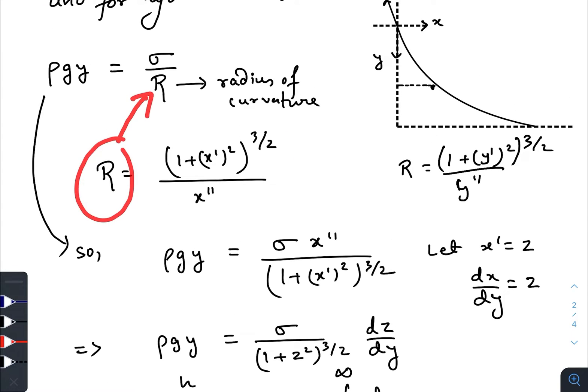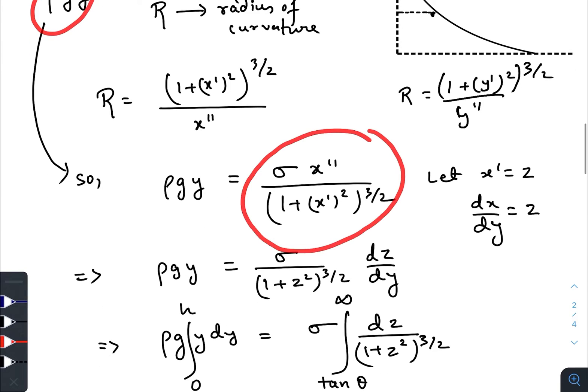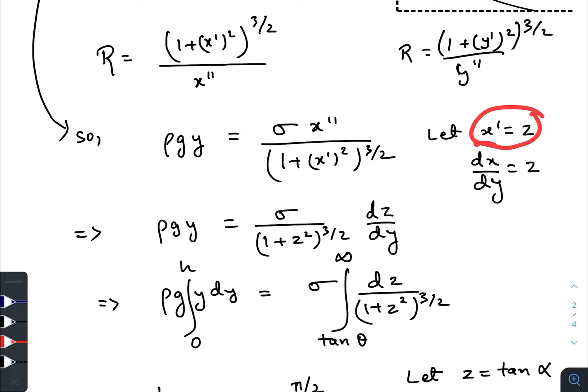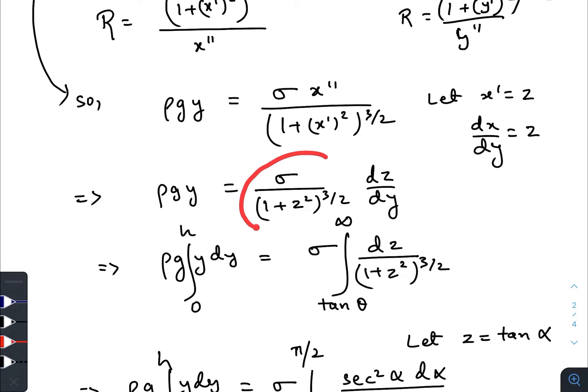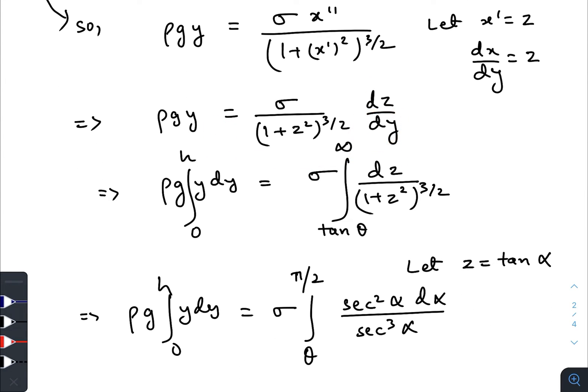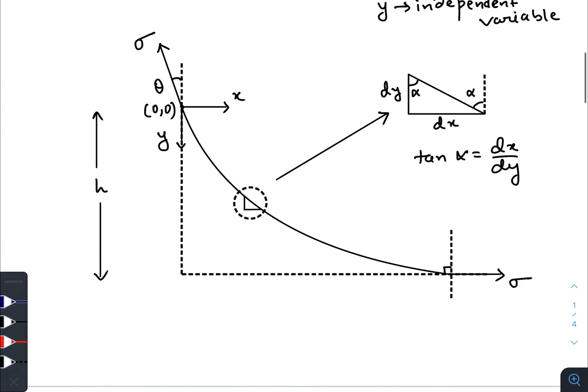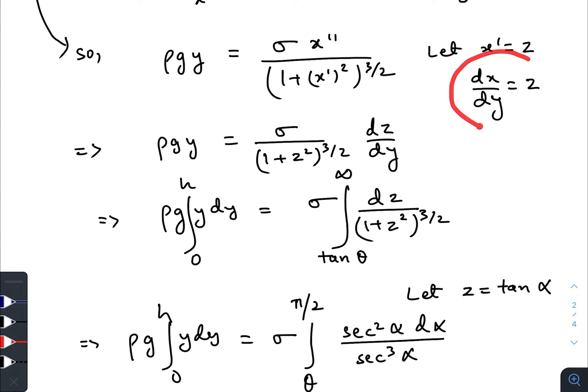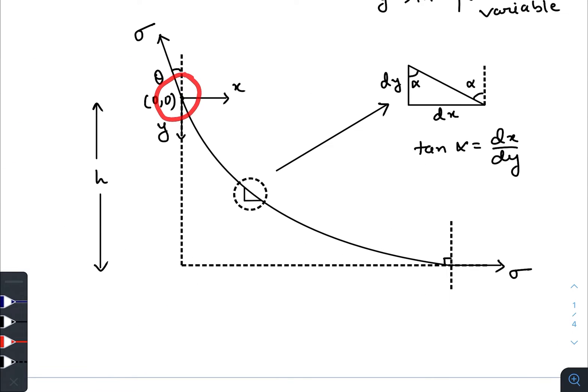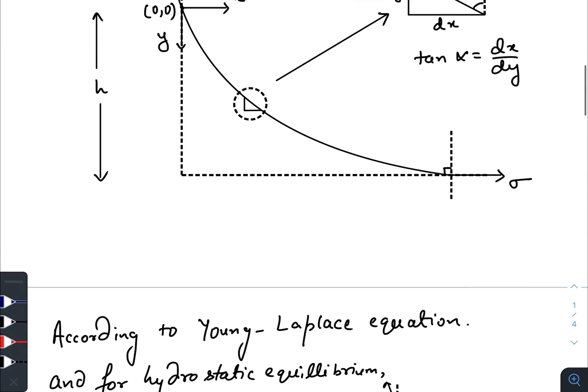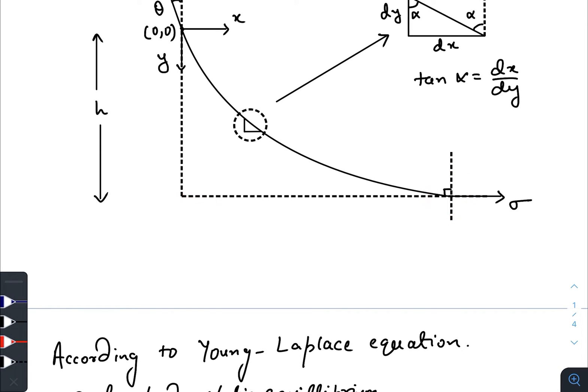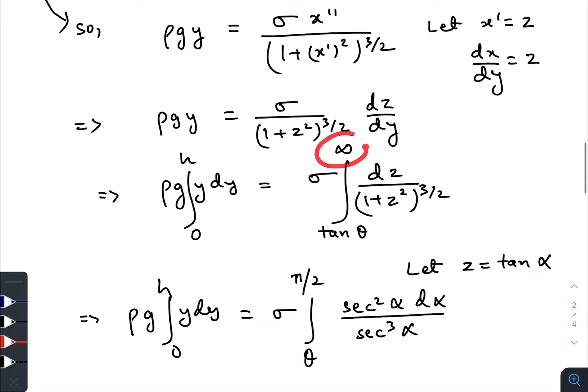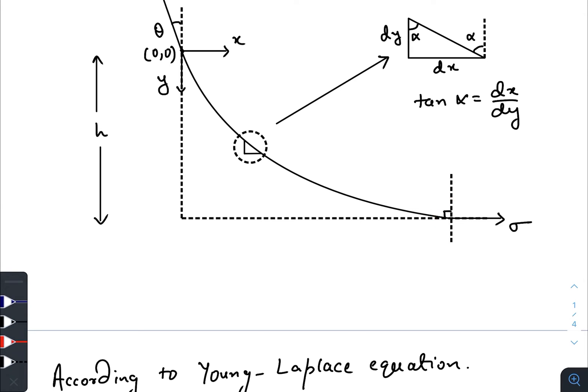So, we will just put the value of R here. So rho g y will be equal to this one. I have taken x prime equals to z, that is dx dy equals to z. So this formula becomes: x prime is z, so this one would be 1 plus z square whole to the power 3 by 2. X double prime becomes dz by dy. Replacing dy here, so after that we will integrate. So for y equals to 0, as I have said, tan alpha would be tan theta, so z equals to dx dy at this point would be equal to tan theta. For y equals to h, that means at this point, dx dy would be equal to tan pi by 2 that is infinite. As you can see that here the angle is 90 degree.